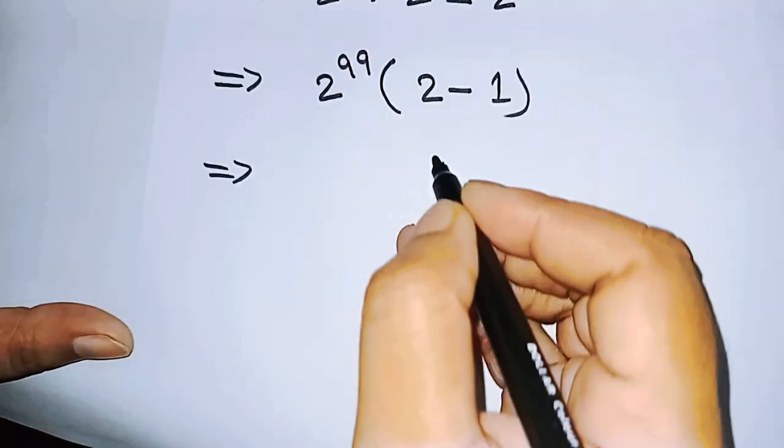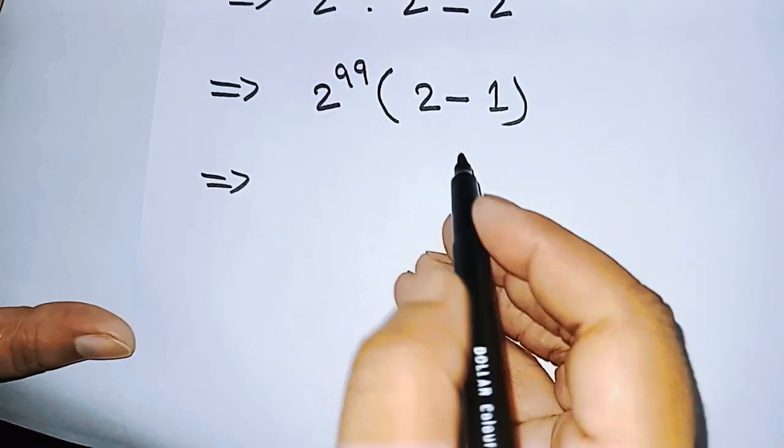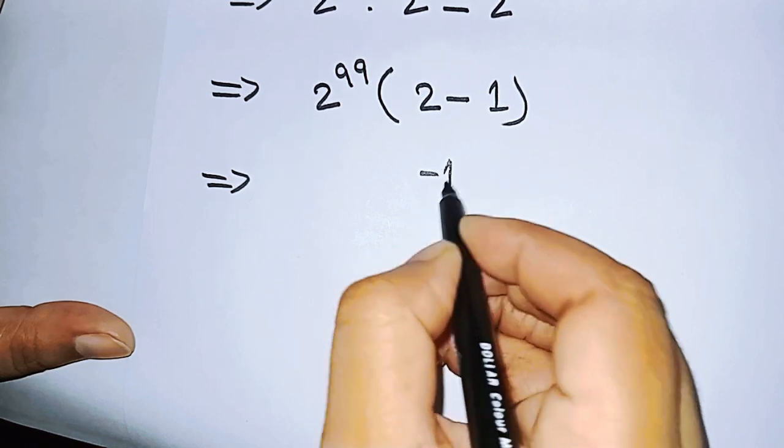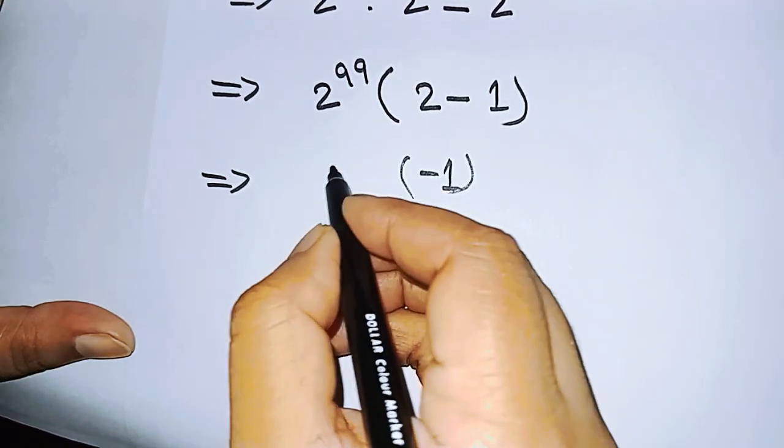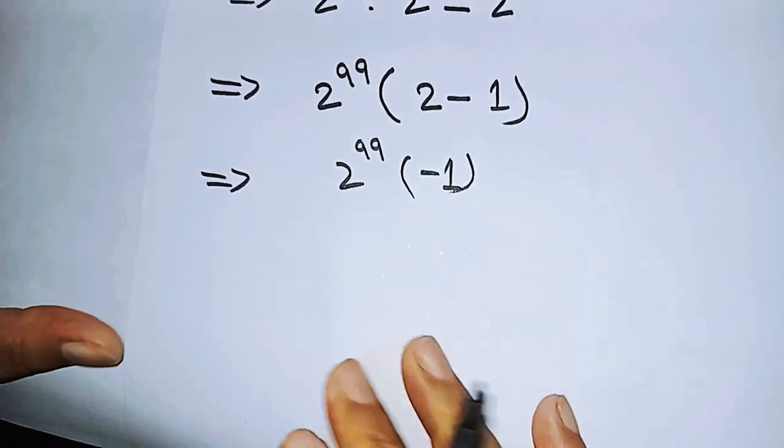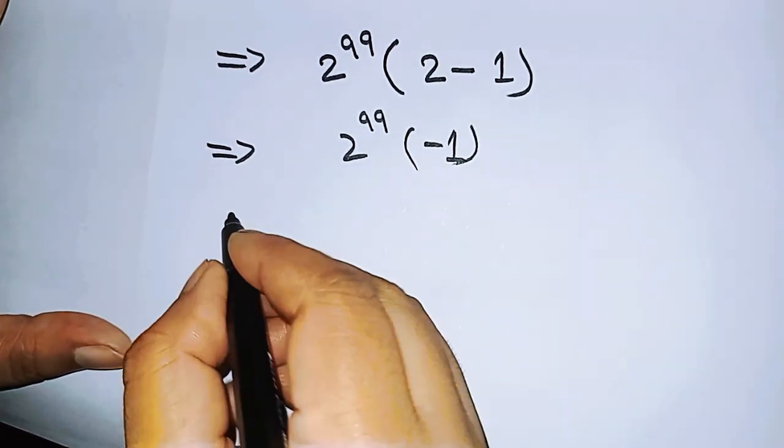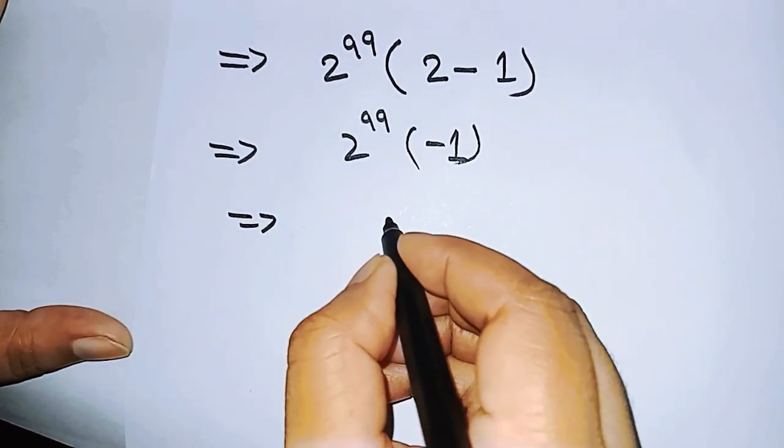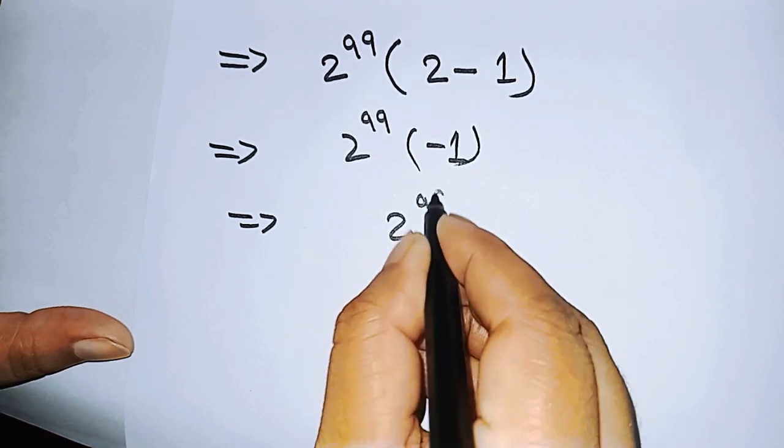So we can write 2 to the power of 99, and we can write 2 minus 1. And 2 to the power of 99 multiply 1 is equal to 2 to the power of 99. So we have an answer and that is our final answer.